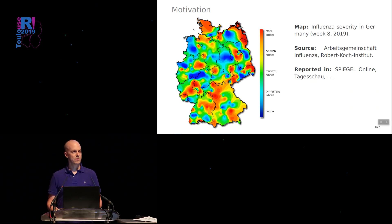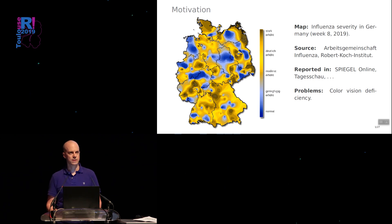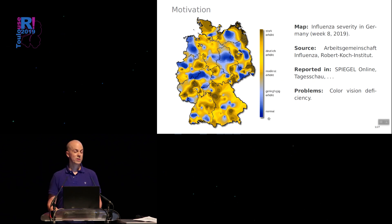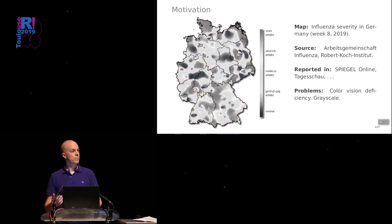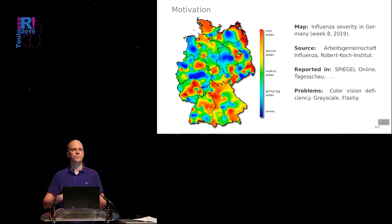Even for people with full color vision there's a problem spotting the areas of most interest. If you have dichromatic vision — certain forms of color blindness — the map might look something like this. Here I emulated deuteranope vision: you can essentially only distinguish high and low areas, and what pops out more are probably the least interesting ones — the low risk areas. If you print this on a grayscale printer it looks similar: what stands out most is least interesting.